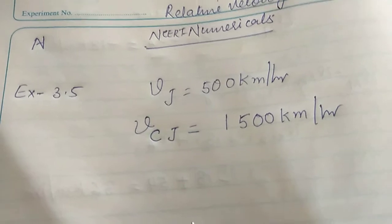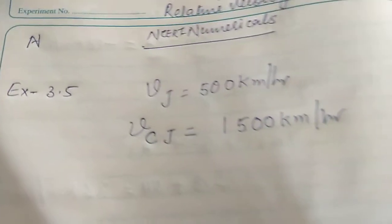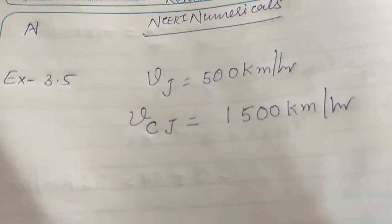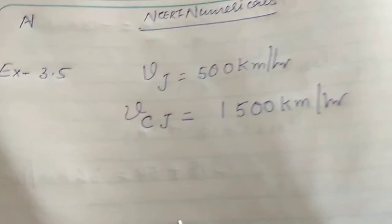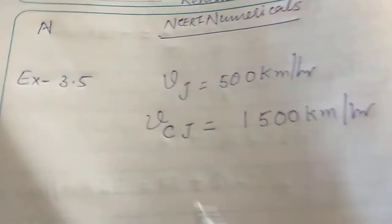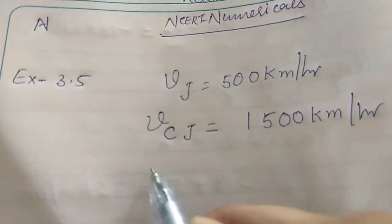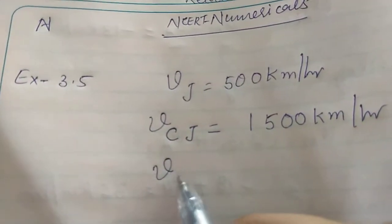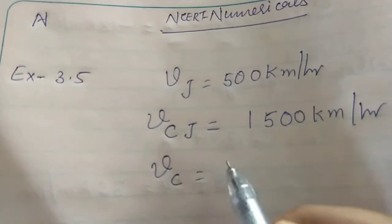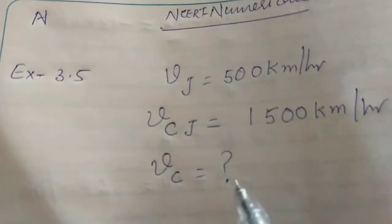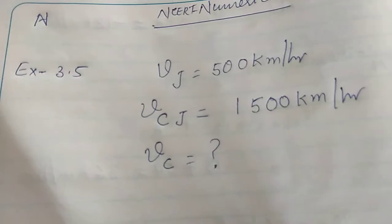We need to find out the velocity of the products of combustion with respect to an observer who is standing on the ground — that is, the velocity of the combustion products with respect to the ground.